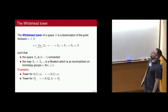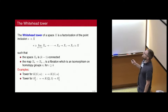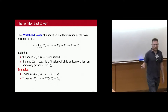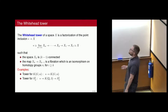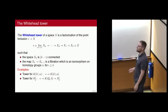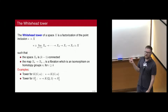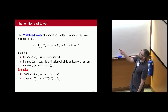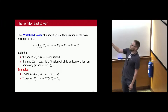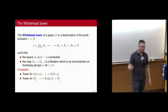So the Whitehead tower is going to be a sequence of spaces related to a space X, with X at the base. You have a sequence where at each step you have a fibration, and the k-th space is going to be (k-1)-connected. Because you have fibrations between each of these spaces, you have isomorphisms on the higher homotopy groups. For example, if we take K(G,n), an Eilenberg-MacLane space, you just get the point over K(G,n) — very trivial because there's only one homotopy group.